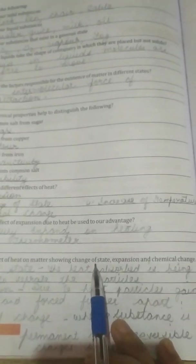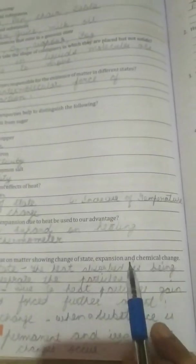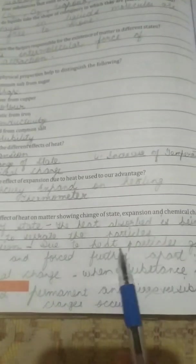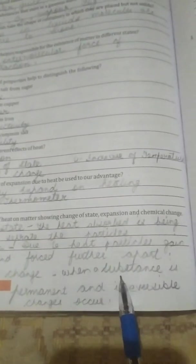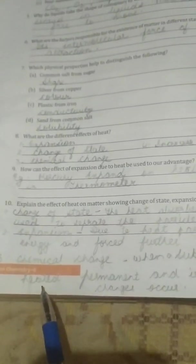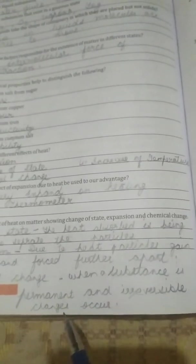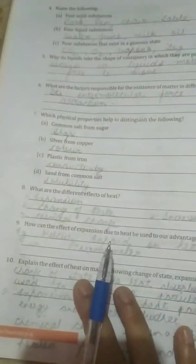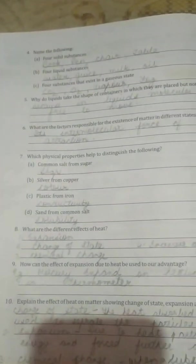Next tenth part, explain the effect of heat on matter showing change of state, then expansion and the chemical change. So we have to write three of them. First, change of state, the heat absorbed is being used to separate the particles. Second, expansion, due to heat particles gain energy and force further apart. And third, chemical change, when a substance is heated, permanent and irreversible changes occur, means it cannot change further. So these all parts you have to write in the book only.